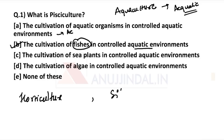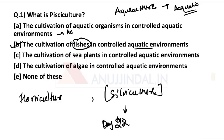Another very important culture is silviculture. The practice of controlling the growth, composition, health, and quality of forests is known as silviculture. So to summarize: silviculture is related to forests, horticulture is related to fruits and vegetables, aquaculture is related to aquatic organisms, and pisciculture is related to fishes. It's important to note the difference between these cultures.